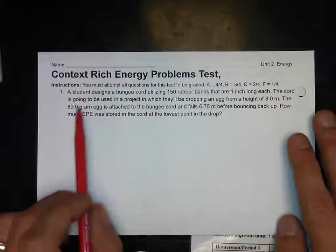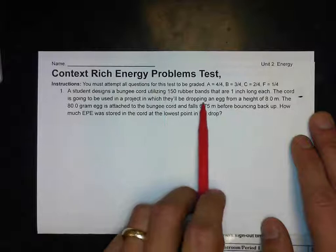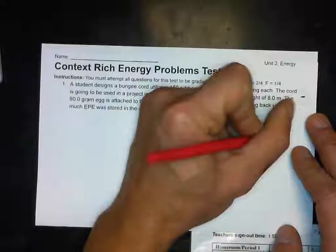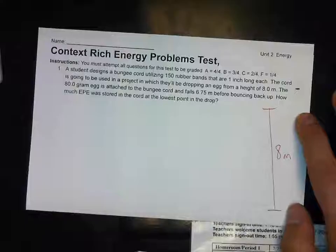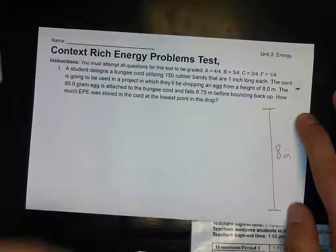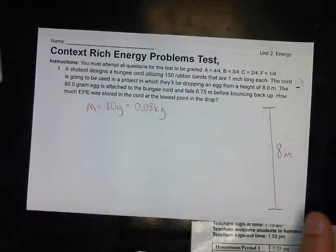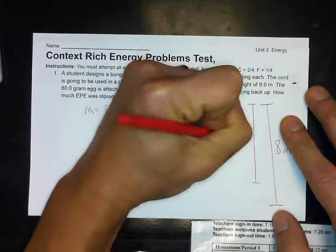I like to draw a picture. A student designs a bungee cord utilizing 150 rubber bands that are one inch each. The cord is going to be used to drop an egg from a height of eight meters. The 80-gram egg is attached to a bungee cord and falls 6.75 meters before bouncing back. This height is eight meters.